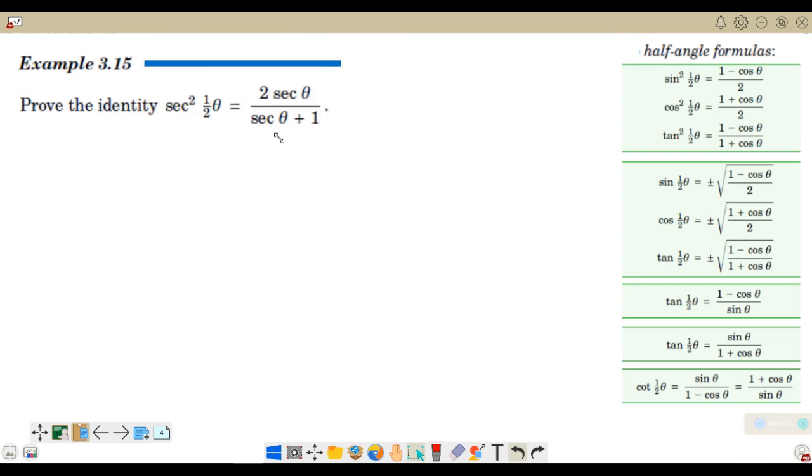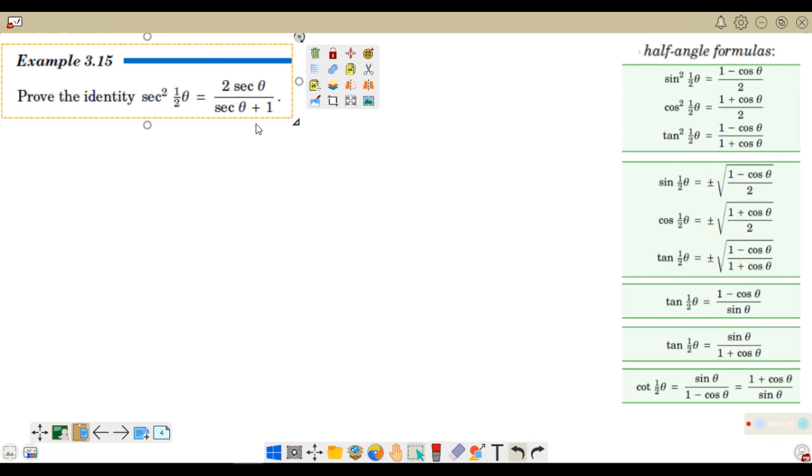Now we'll move to example 3.15. The problem is, we have to prove the identity that secant squared 1 half theta is equal to 2 secant theta over secant theta plus 1. If you will take notice here, we don't have secant in the half angle formulas. So, what idea can we use?